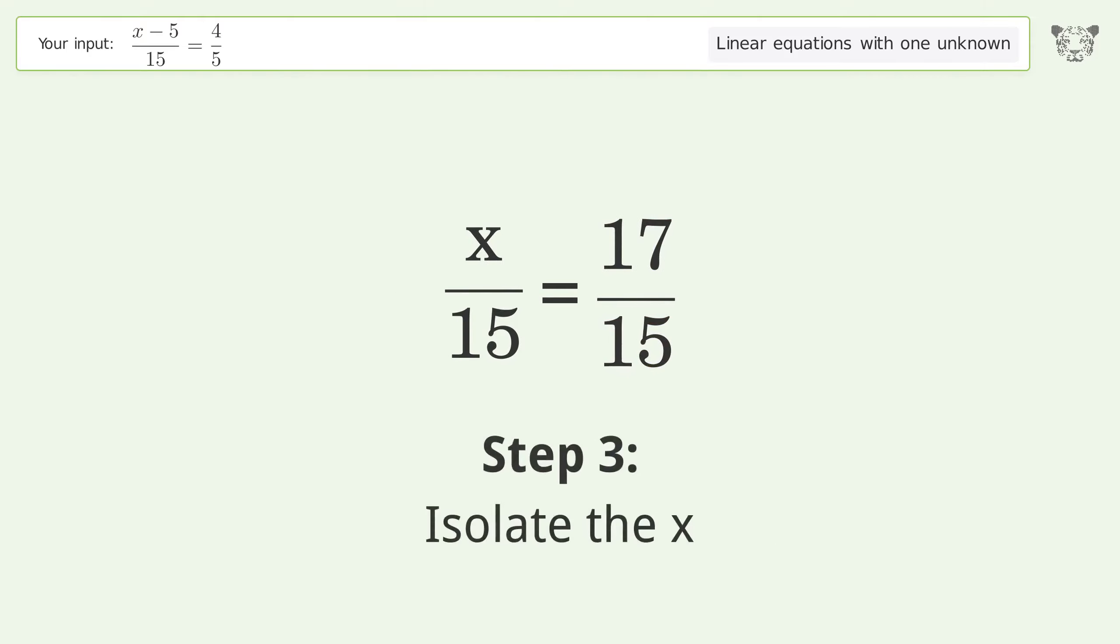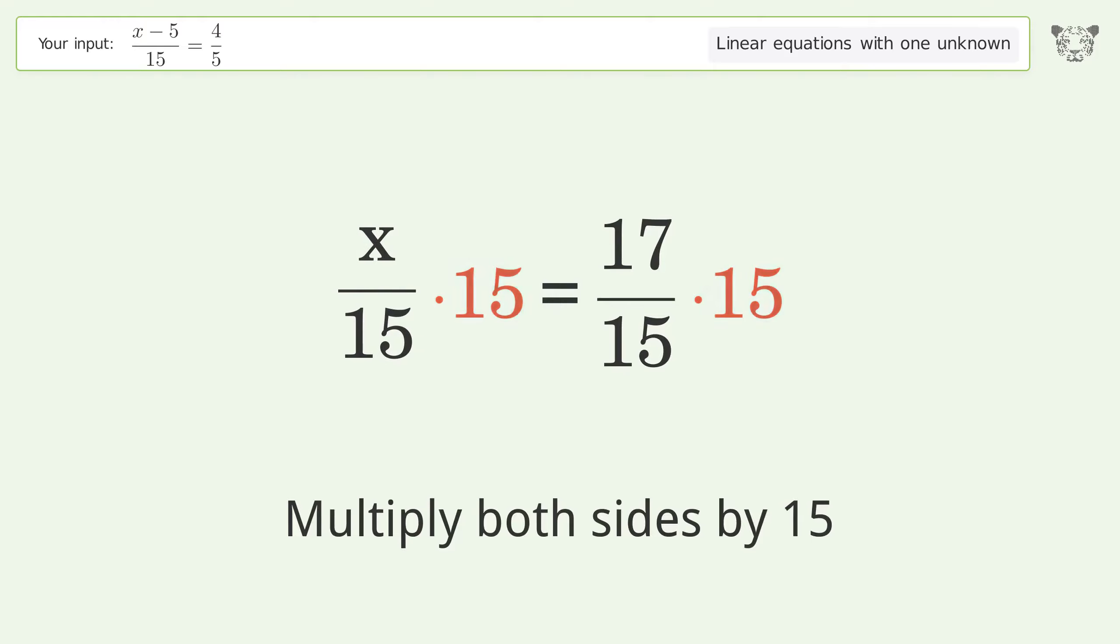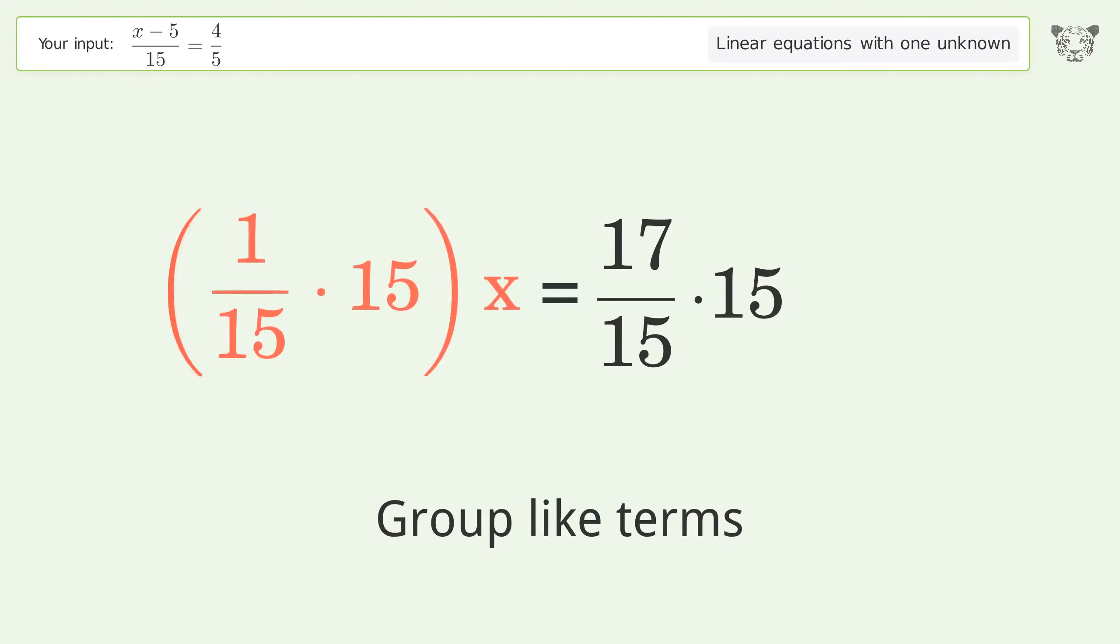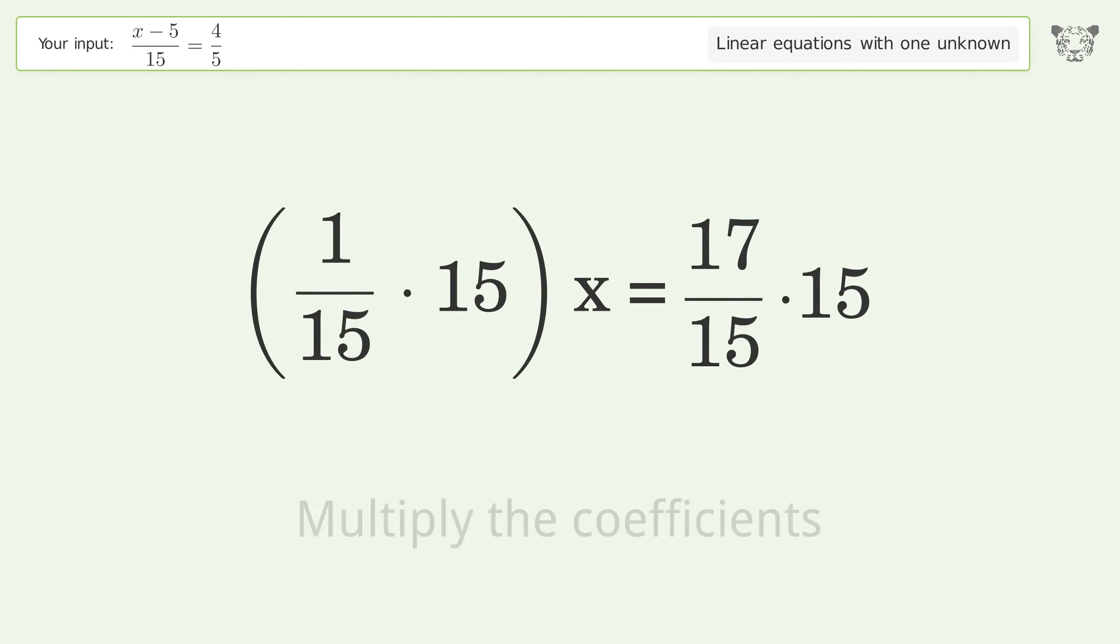Isolate the x. Multiply both sides by 15. Group like terms. Multiply the coefficients.